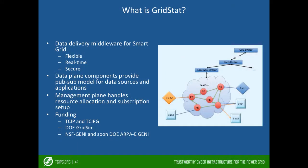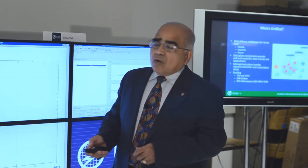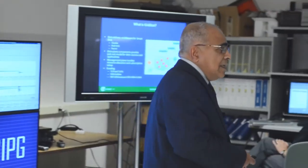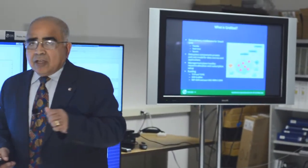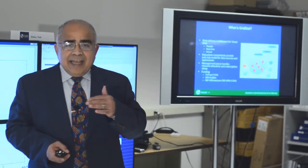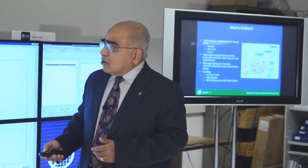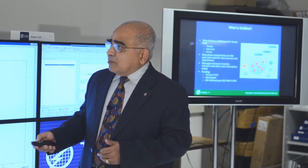GRIDSTAT is being developed as part of the TSIP and TSIPG project. It is a publisher-subscriber system with one data plane — which has the switches and so on — that moves data from publishers to subscribers. Because not all data is needed by all subscribers, it has a management plane that decides how to move the data, from where to where, and at what rates. So we have a data plane and a management plane.